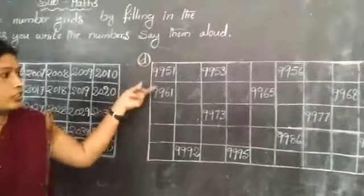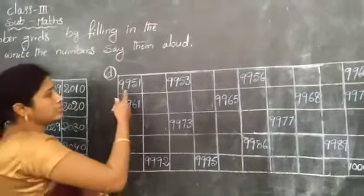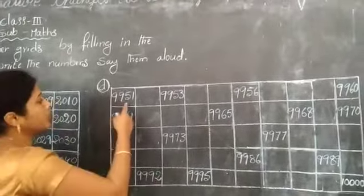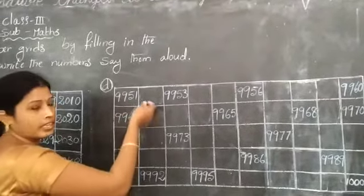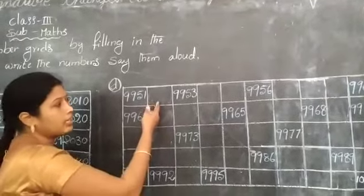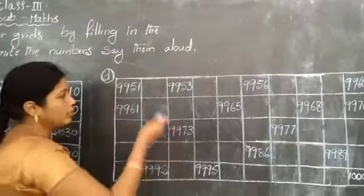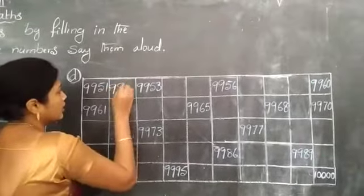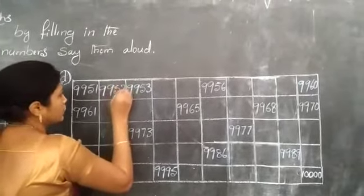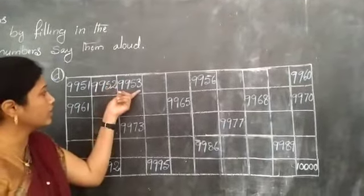We should fill this table. What is this number? 9951. Next, blank, and 9953. So what's the number here? 9952. So what's the next number for this?